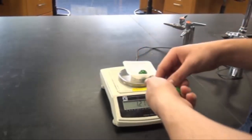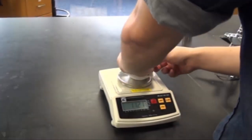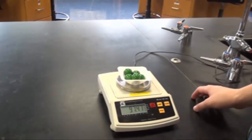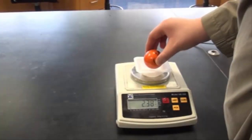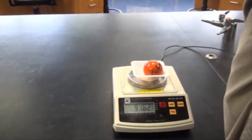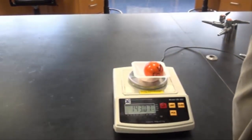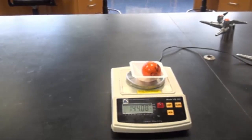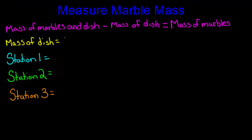At the second station, the combined mass was 97.47 grams. And at the third station, the combined mass was 144.08 grams. After these masses have been recorded, learners should then subtract the mass of the plastic dish from their combined mass in order to determine the mass of just the marbles.